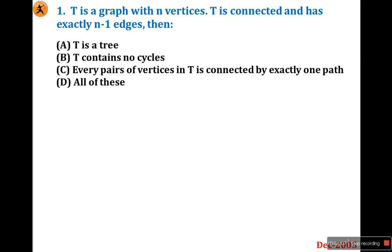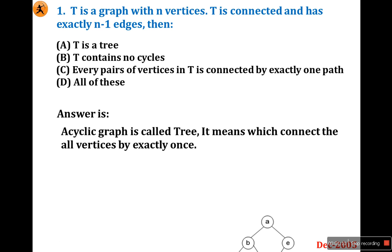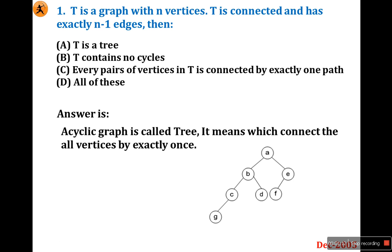If it is a tree, it definitely has n vertices and n-1 edges. For example, assume this is a tree with seven vertices and exactly six edges — n vertices, n-1 edges. So it is a tree.